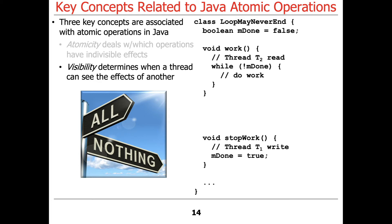The next topic is visibility, which is what determines when a thread can see the effects of another. So here's another example I think I've talked about before. This is loop may never end. We give it a Boolean mdone field the value of false. Again, I don't have to give false there. That's belt and suspenders. It would initialize itself to false.